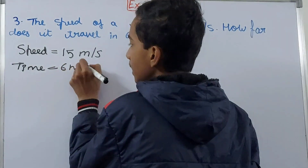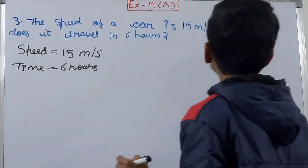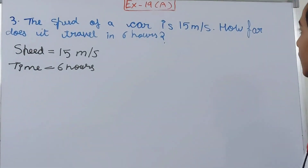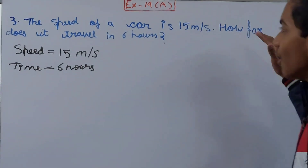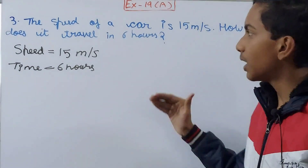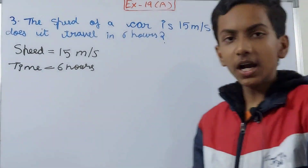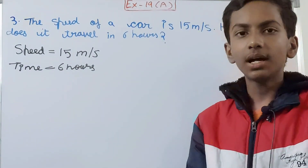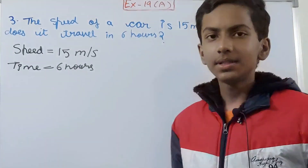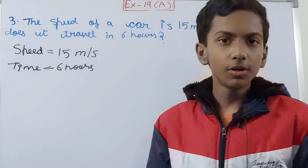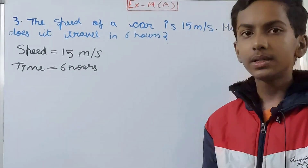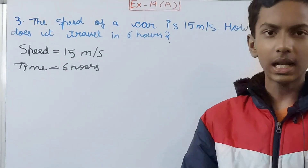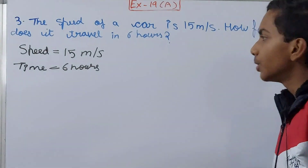They are asking us the distance — 'how far does it travel?' The word 'far' tells us we have to find the distance. If it asked how much time it would take, we'd find time; if it asked for the average speed, we'd find speed.